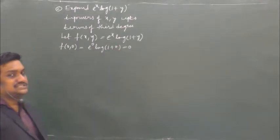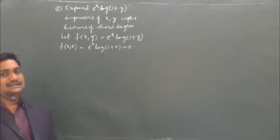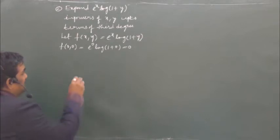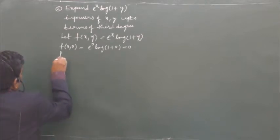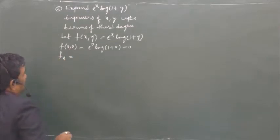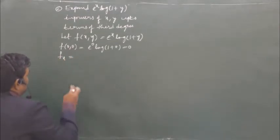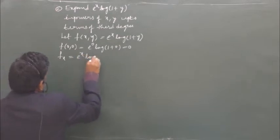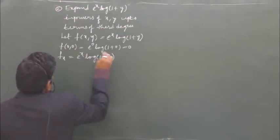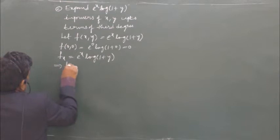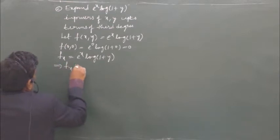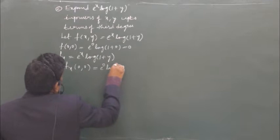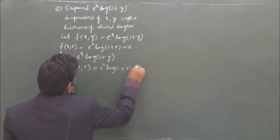The next term in the McLaurin series is x · fx at (0,0). Now let us find fx, which is the partial derivative of f with respect to x. It is e^x · log(1+y). Evaluating at (0,0): e^0 · log(1+0) = 0.